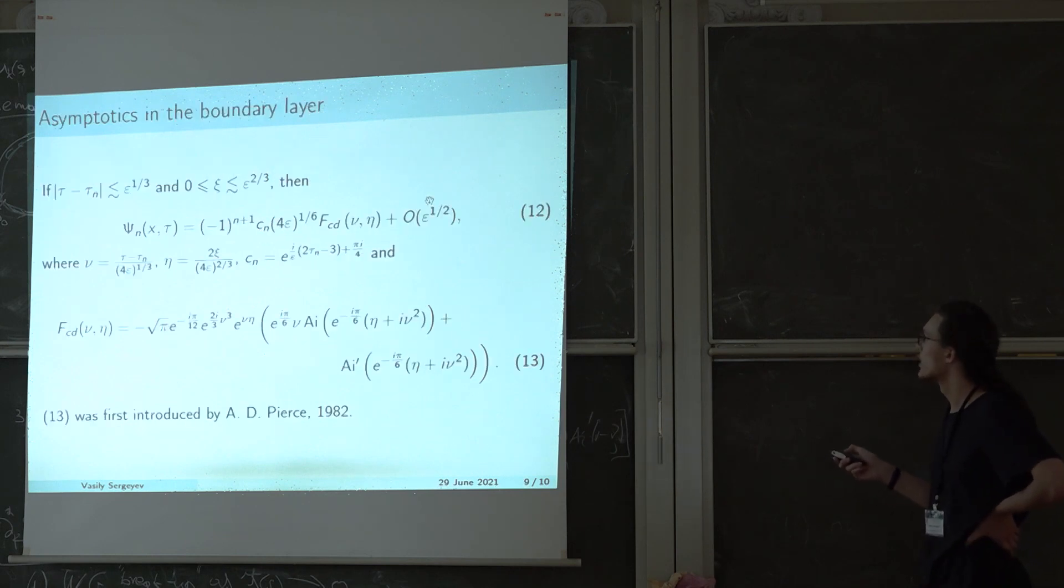And let's say instead that this formula can be simplified under additional assumptions. If we assume that we are in the boundary layer, that is that we are in this vicinity of the critical moment in time and this close to the edge of the potential well.